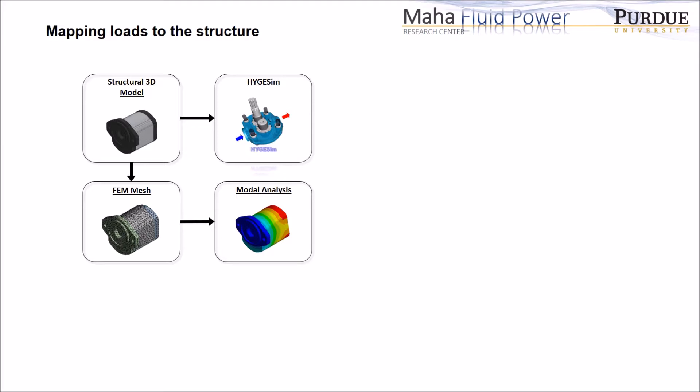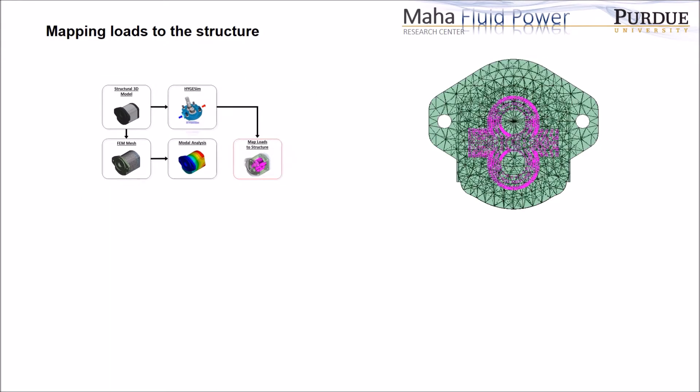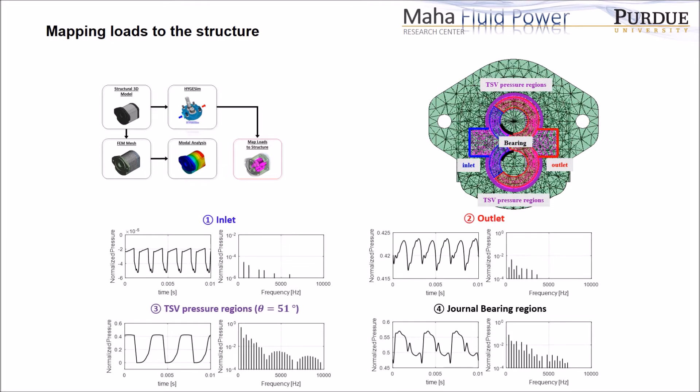Then, the effective loading functions are mapped to the proper area of the structure. This figure shows all the nodes of the finite element mesh that are exposed to the dynamic pressure. The regions exposed to the dynamic pressure are subdivided into four areas depending on the types of loading functions. And in this figure, we can see each of the dynamic pressures in time domain and frequency domain.